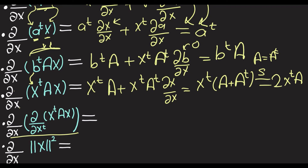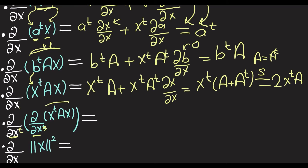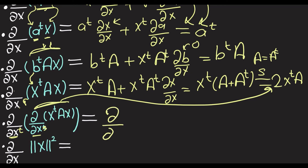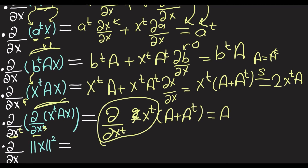Now, how about ∂/∂x of ∂/∂x-transpose of x-transpose Ax? We can work on the more general case. We're going to be working on x-transpose times (A plus A-transpose). This is going to give us I times (A plus A-transpose). In the case the matrix is symmetric, we'll get 2A.